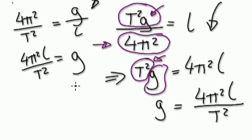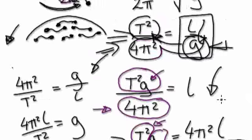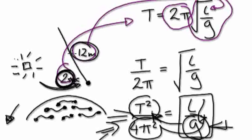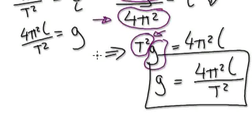Now we've got a formula for G. G equals 4 pi squared L over T squared. Back to our original situation: the time it takes to make one swing is 2 seconds, and the length of the string is 12 meters. So let's put those values into the formula.